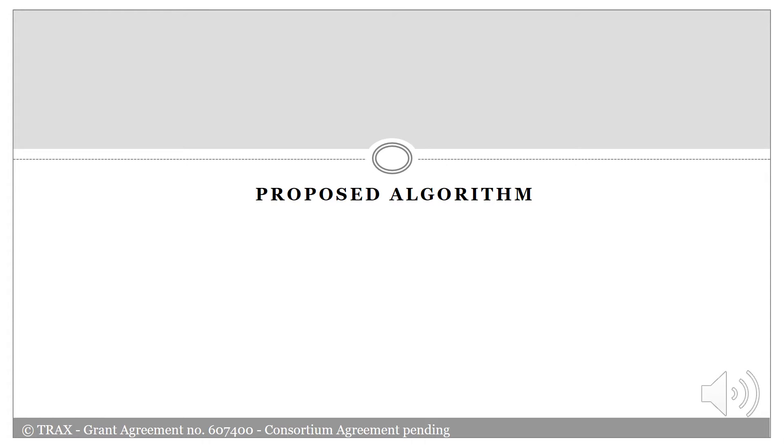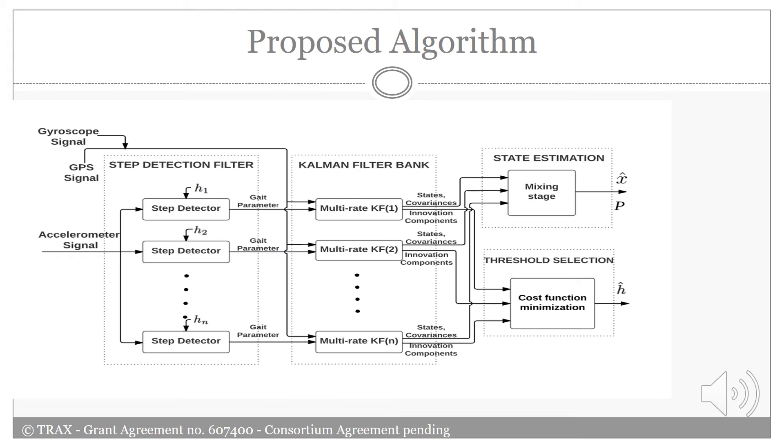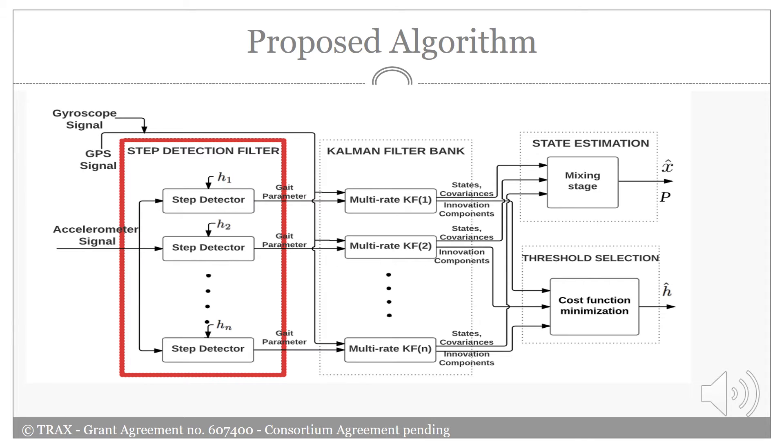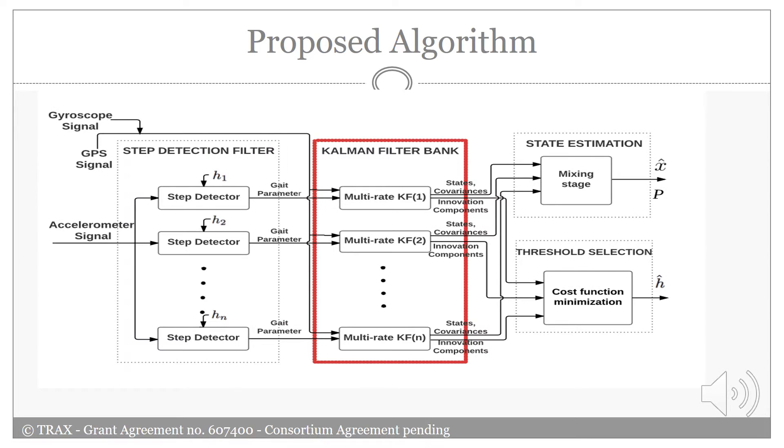Now we talk about the proposed algorithm. The block diagram of the proposed pedestrian dead-reckoning algorithm that learns gate parameters is shown in this figure. The algorithm basically consists of four different blocks. In the step detection filter block, N different thresholds are applied to a bank of step detectors whose inputs are the accelerometer signals. The detected steps as the output of these filters are passed to the Kalman filter bank block consisting of N multi-rate Kalman filters that process the step detections.